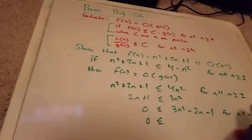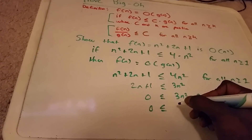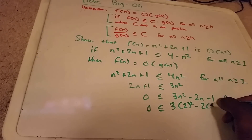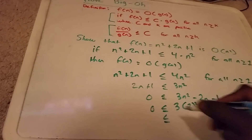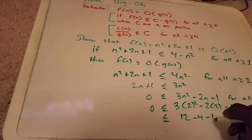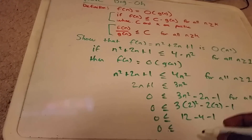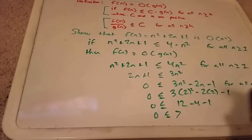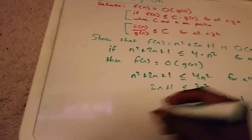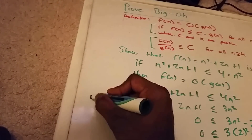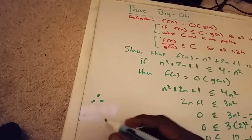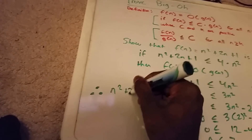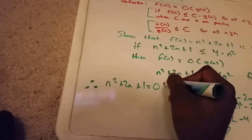So that is true. Let's try another value: let's choose n equals 2. We get 3 times 2 squared minus 2 times 2 minus 1, which equals 12 minus 4 minus 1, so 0 is less than or equal to 7. And you can see that this continues for all n greater than or equal to 1. Therefore — that's what the three dots mean — n squared plus 2n plus 1 is Big O of n squared.